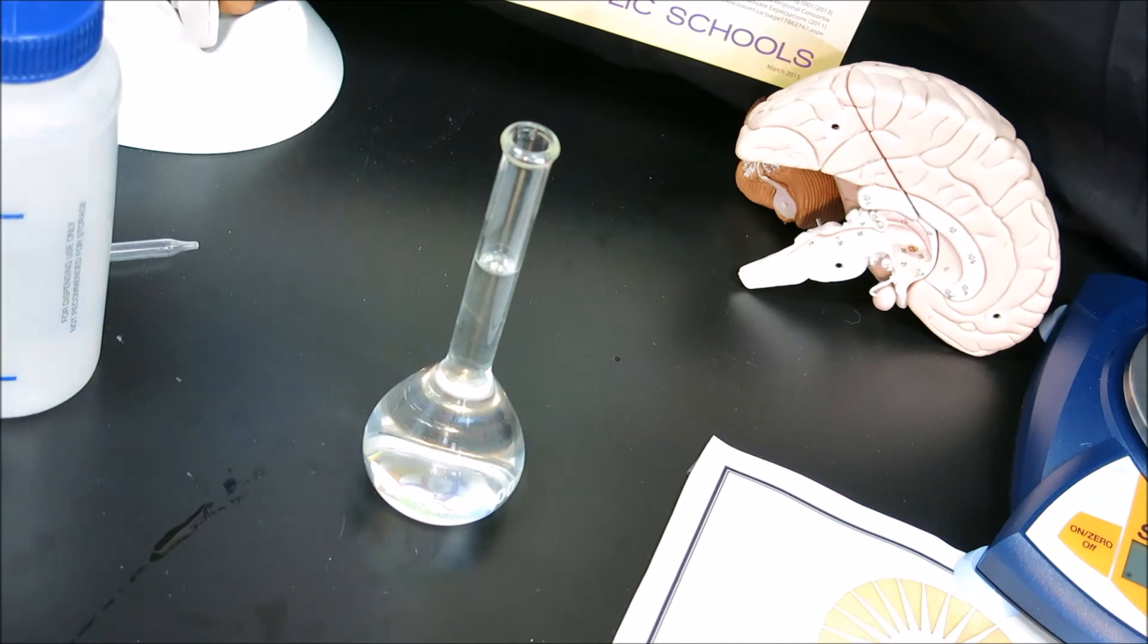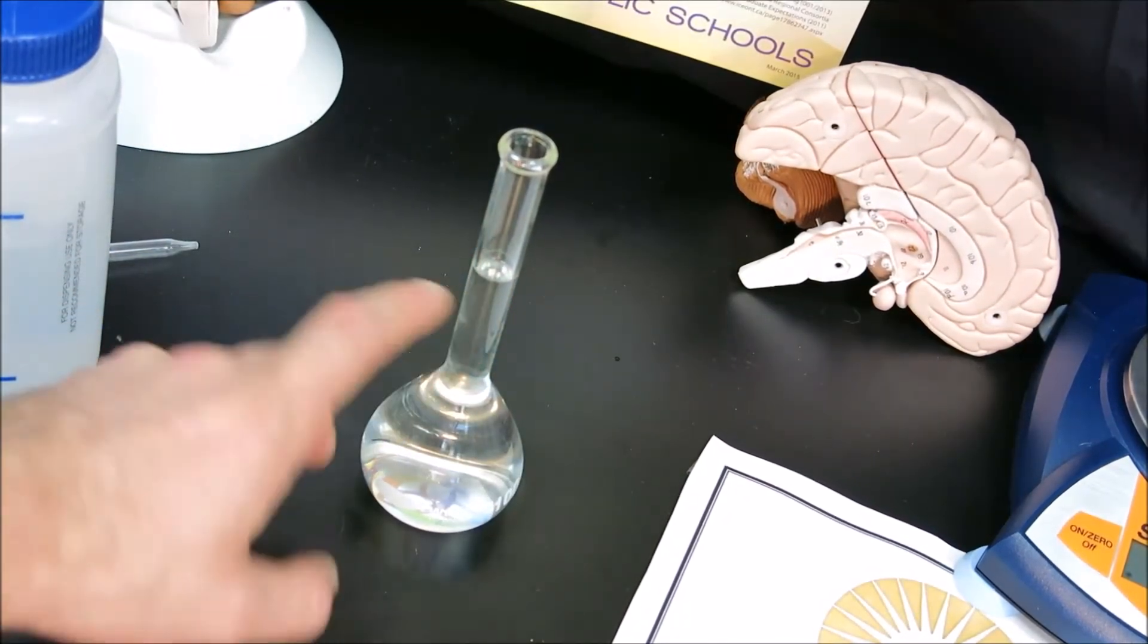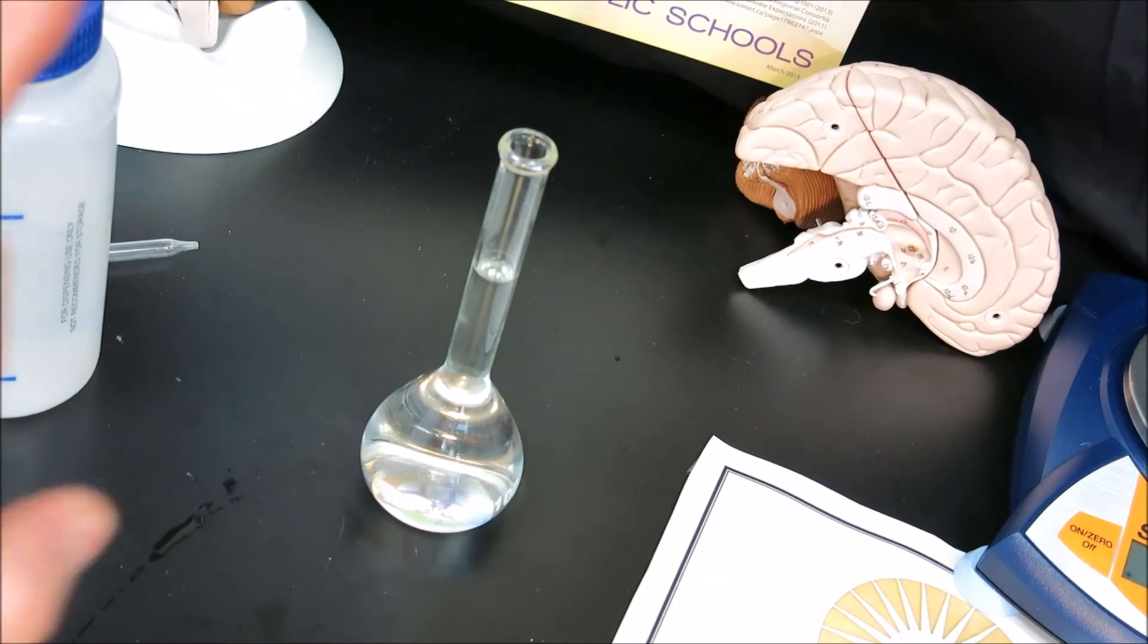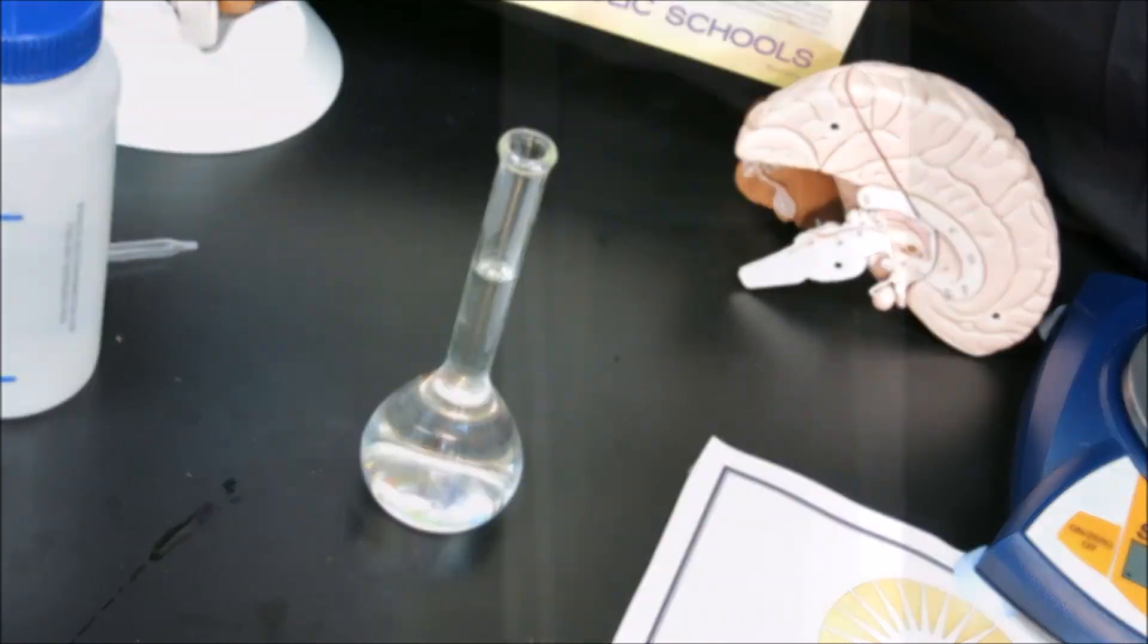At this point, it's very important to bring your eye to the level of that line, and you will try to see the line on the front of the neck and the back of the neck as one single line. If you can see both the front and back line, we call this parallax, which means your eyes are not exactly level with the line and you cannot actually see the meniscus in the flask.